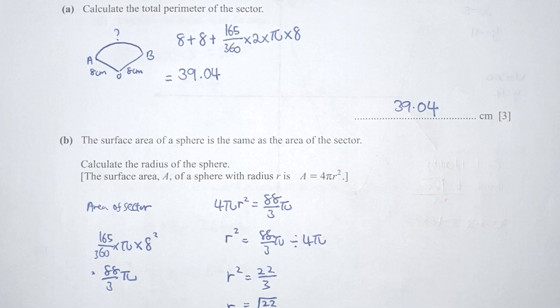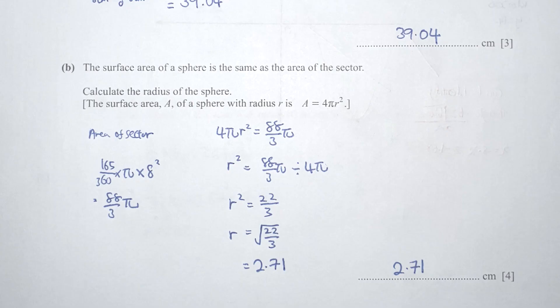Question 9 (labeled 16): they refer to total perimeter, so remember to include two radii. The calculation is 8 plus 8 plus (165 over 360 times 2 times pi times 8), giving 29.04. For part B, the area of this sector is (165 over 360 times pi times 8 squared) equals 88 over 3 pi. This equals the surface area of the sphere: 4 pi r squared. Solving gives r equals square root of 22 over 3, which is 2.71.